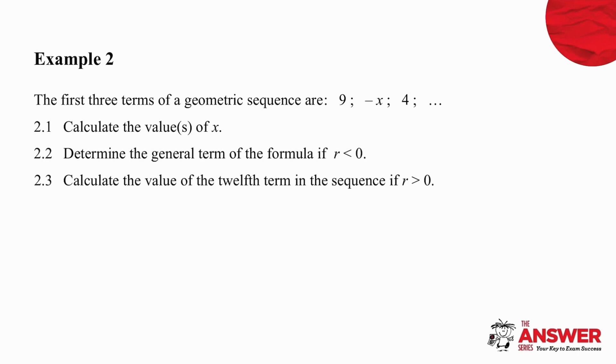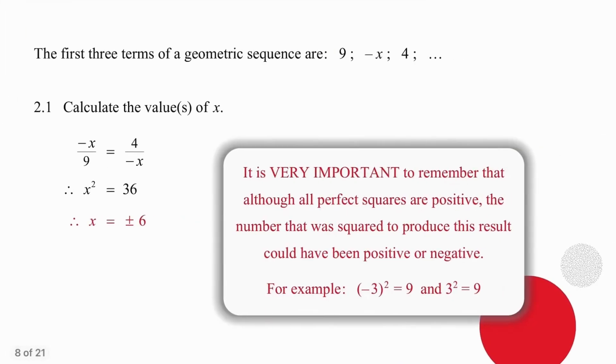Pause the video, try this example on your own and then I will go through it with you. We have the first three terms given but we have an unknown of x and we know that the sequence is geometric. So we apply the definition, divide the second term by the first and equate that to the third term divided by the second.